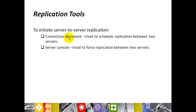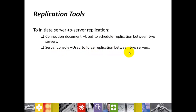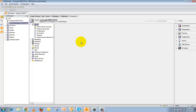Replication tools. To initiate a server-to-server replication we need certain tools. We need a Connection Document or a Server Console. The Connection Document is used to schedule replication between two servers. The Server Console is used to force replication between two servers. Let's see how the connection document looks and how to initiate replication from the server console. Open your Domino Administrator client.